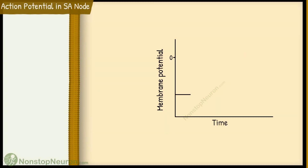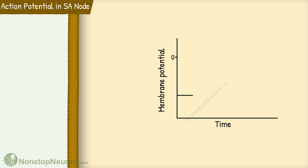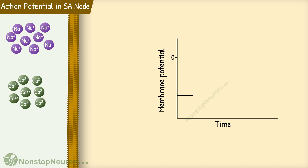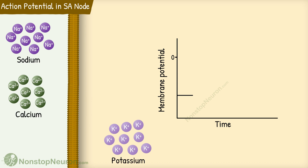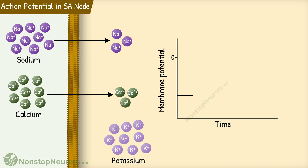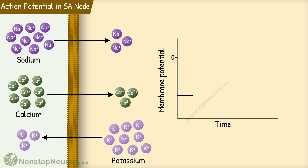Now let's move towards the action potential in the SA node. There are three main ions involved in the rhythmicity of the SA node: sodium, calcium, and potassium. Sodium and calcium concentration is higher outside the cell and they tend to diffuse in. As they are positively charged ions, their entry takes the membrane potential towards electropositivity. Potassium concentration on the other hand is higher inside, so it tends to diffuse out. The exit of positively charged potassium ions makes the cell electronegative. The balance between the movement of these ions controls the rhythmicity.